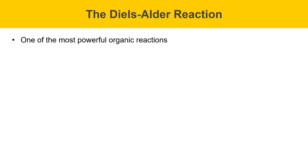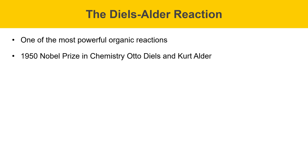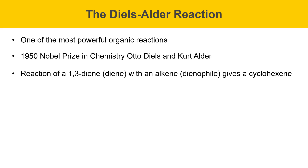The Diels-Alder reaction is one of the most powerful reactions in organic chemistry. In 1950, the Nobel Prize in Chemistry was awarded to Otto Diels and Kurt Alder for their work on this reaction, and therefore it bears their name. It's a reaction of a 1,3-diene — the diene component — with an alkene, which serves as something called a dienophile, and the reaction of these two gives a cyclohexene.